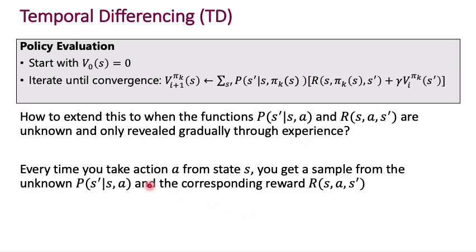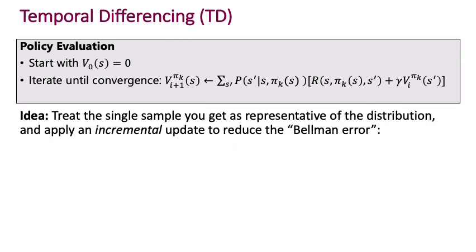To restate: every time you take an action a from state s, you get a sample from the unknown transition probability and the corresponding reward. This is important to the idea of temporal differencing. If you stare at the Bellman update equation for policy evaluation, the quantity on the right is an expectation over the transition probability distribution. Every time we perform an action in the environment, we get to see one sample of that quantity.